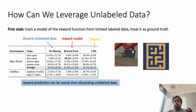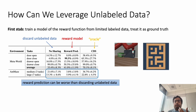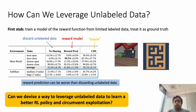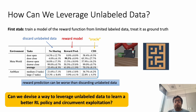We suspect this is because the error induced in the reward model can get exploited when running RL on it, when trying to optimize the reward function. The natural question that arises is: can we actually devise a way to leverage unlabeled data to learn a better offline RL policy without suffering from this problem of reward exploitation?